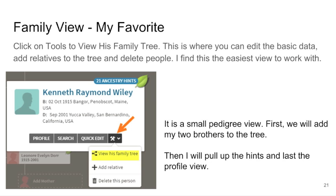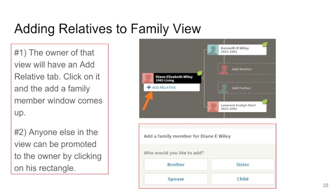When you click on the crossed tools icon, it will let you view the family tree for this individual, add relatives to that tree, and delete this person from the tree but not from the database. The owner of the view of the little family tree will have an add relative tab. The window that comes up lets you choose the relative to add. A new individual add screen comes up so then you can add them.